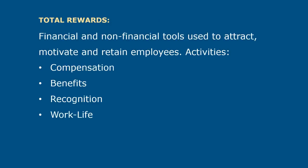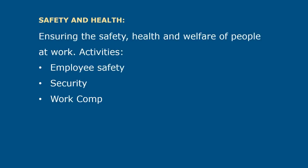Total rewards are the financial and non-financial tools used to attract, motivate, and retain employees. The activities of total rewards include compensation, benefits, recognition, and work-life effectiveness. Employee safety and health is about ensuring the safety, health, and welfare of people at work. The activities of safety and health include employee safety, security, and workers' compensation.